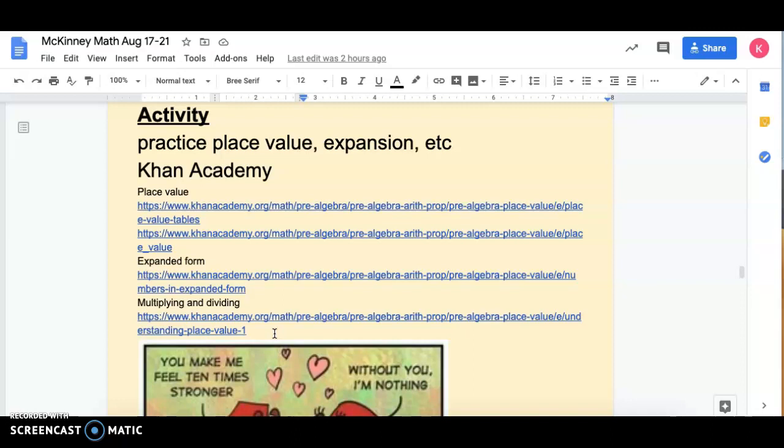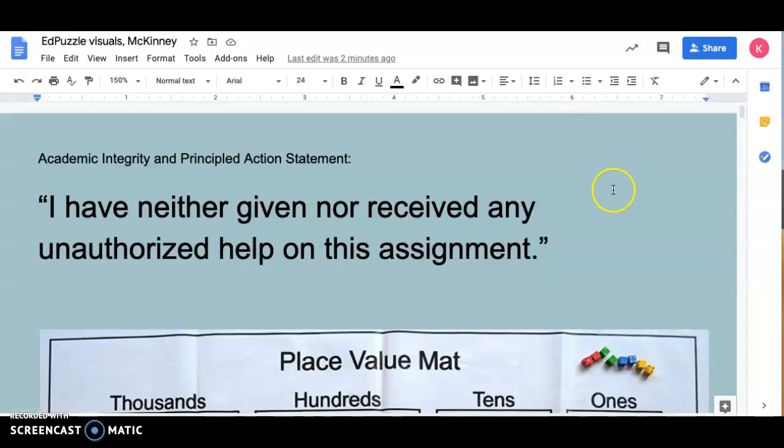This EdPuzzle quiz is for a grade and the first thing you're going to do is type the Academic Integrity and Principled Action Statement. In just a second it'll prompt you to type 'I have neither given nor received any unauthorized help on this assignment.' So you may not ask any friends, you may not Google anything, you may not use any calculators, anything like that. Go ahead and type this.